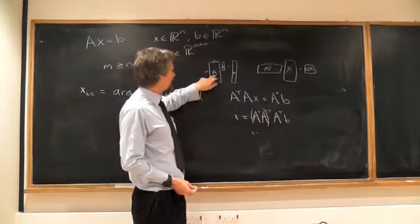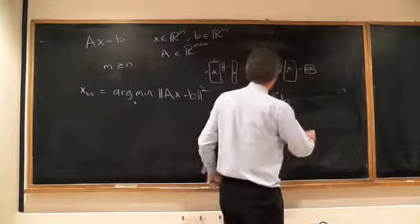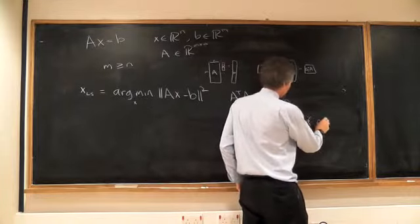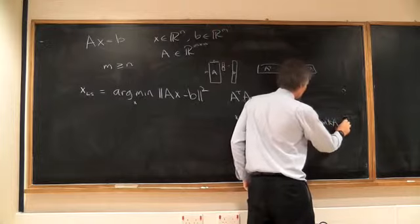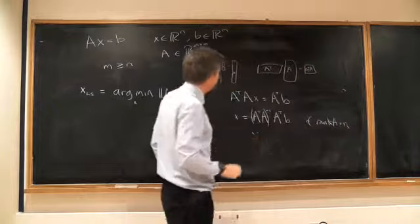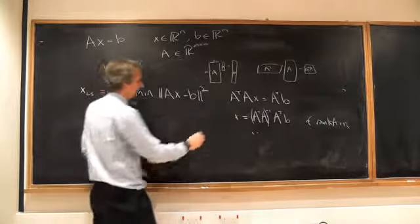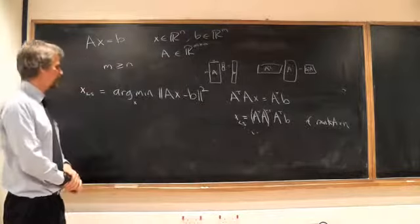Assuming that A has full rank, if rank of A is equal to n, which is the biggest it can be, then A^T A is invertible, in which case, this is the minimum, and this is actually the x_LS, the minimizer.